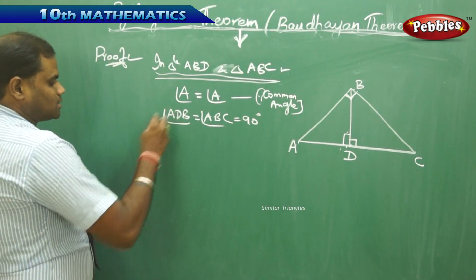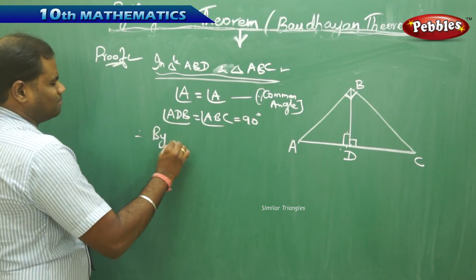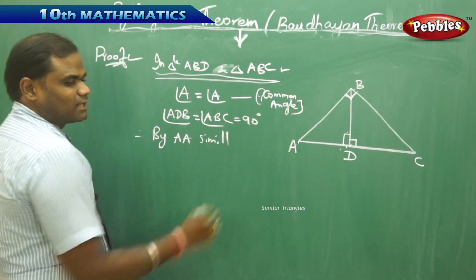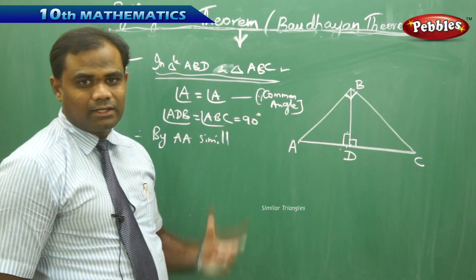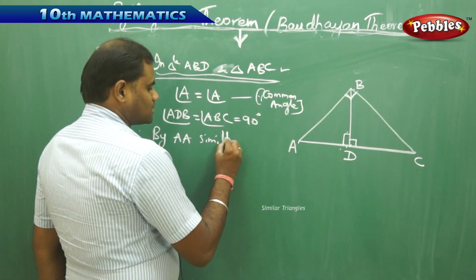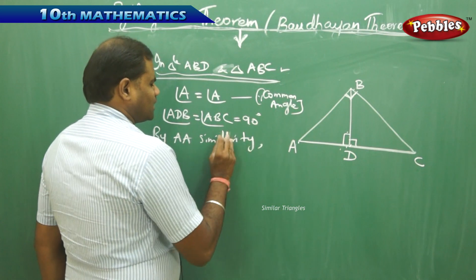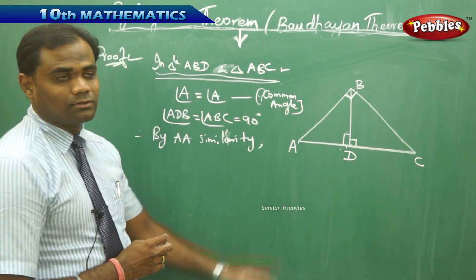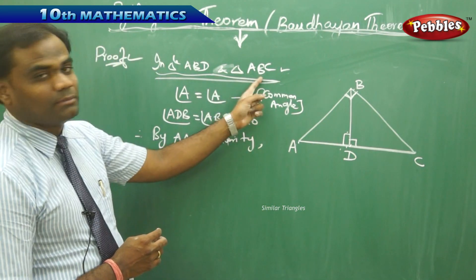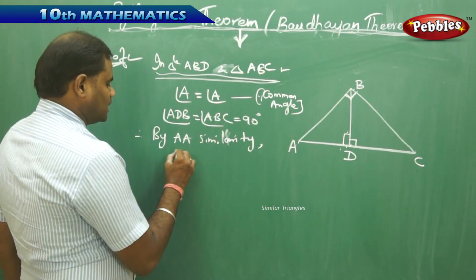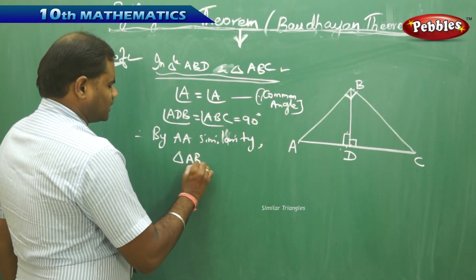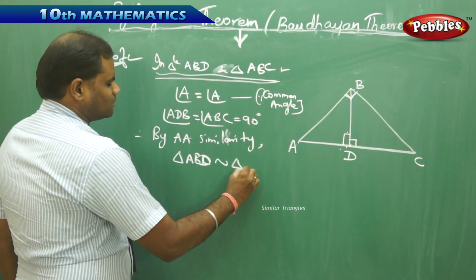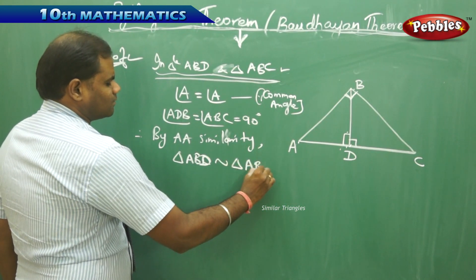That is, angle ADB equals angle ABC, which is 90 degrees, because each of them is 90 degrees as assumed from the perpendicular and given. Therefore, by double A similarity — if two of the angles are equal, then by AA similarity — triangle ABD is similar to triangle ABC.